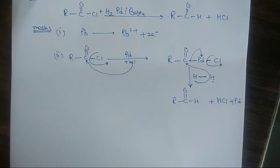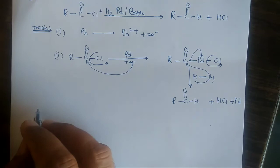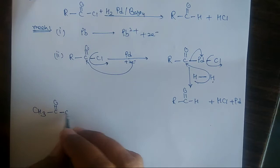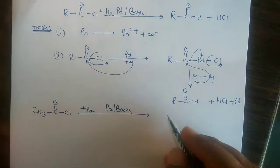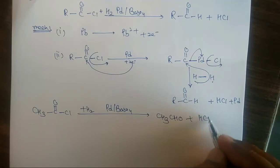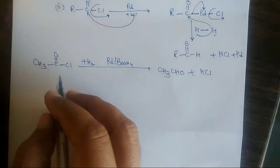This is the mechanism of the Rosenmund reaction. Let me give one more example. Here we have CH₃ C double bond O and Cl — acetyl chloride. When we add hydrogen and Platinum with barium sulfate as a catalyst, we get acetaldehyde and HCl is lost.